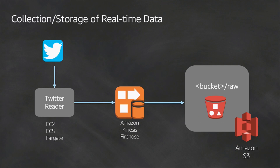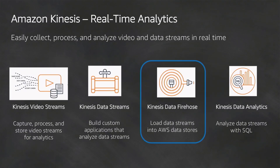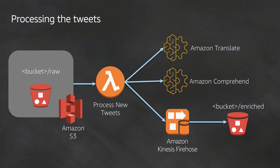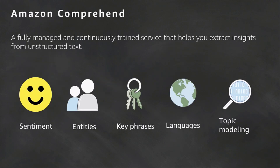ECS is Elastic Container Service. That container posts things into the Firehose and into the raw S3 bucket. Once we have those raw tweets in S3, we rely on an S3 event notification that triggers a Lambda which calls Translate and Comprehend, then posts those enriched records back into another Firehose stream that sends them to a second S3 bucket.